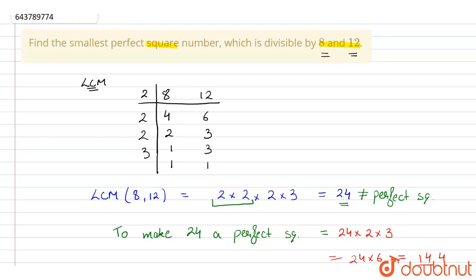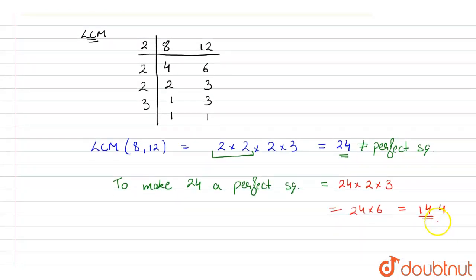Therefore, the smallest perfect square number which will be divisible by 8 and 12 is 144.